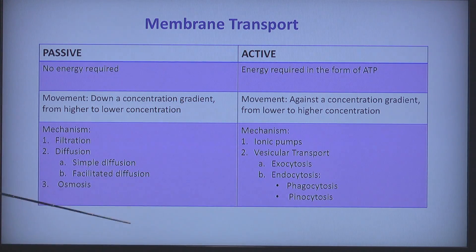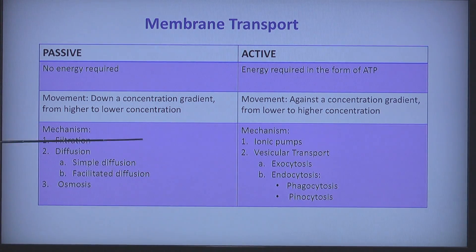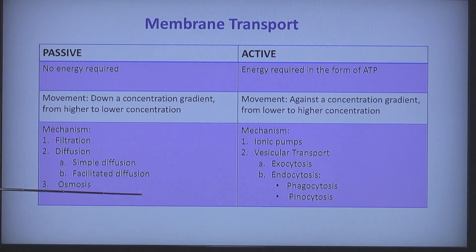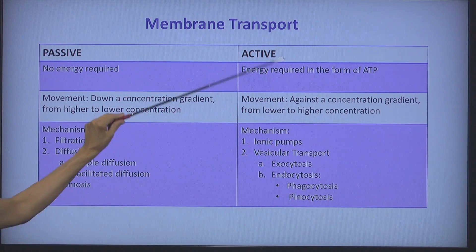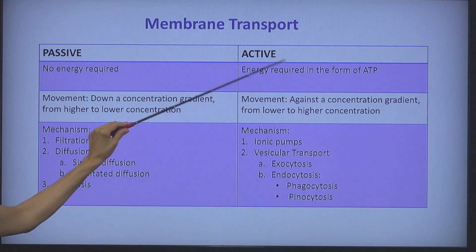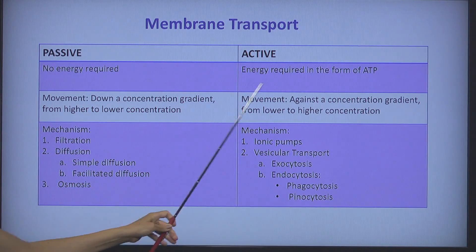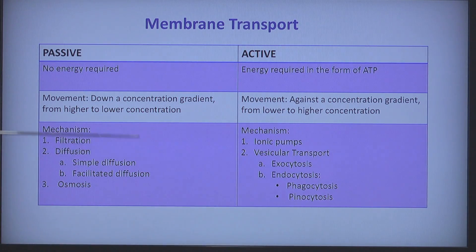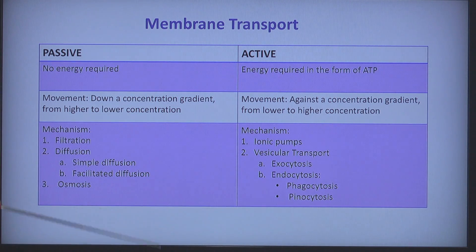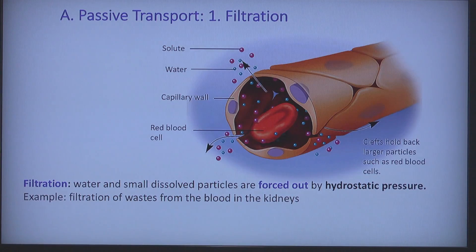The mechanisms of passive transport are filtration, diffusion — two types of diffusion — and osmosis. The mechanisms of active transport will be discussed in another presentation. For today, we are discussing passive transport mechanisms.